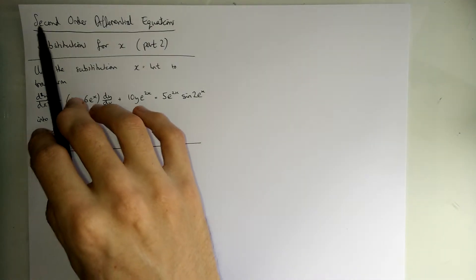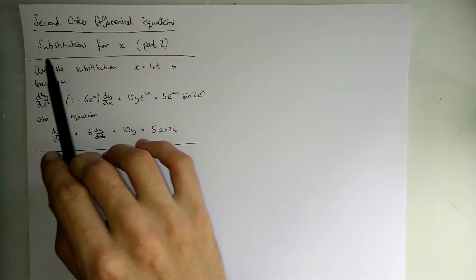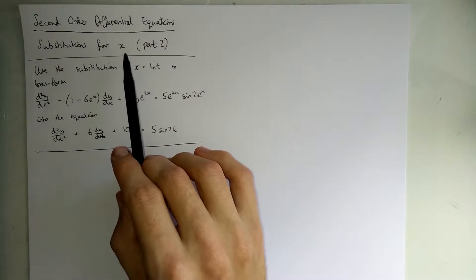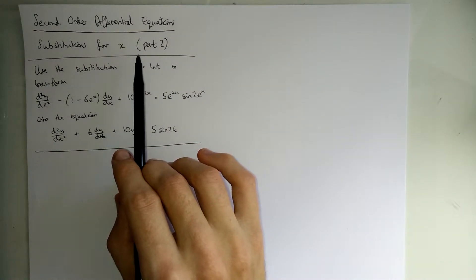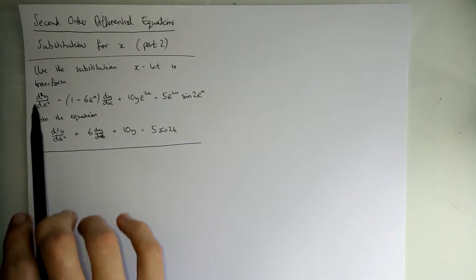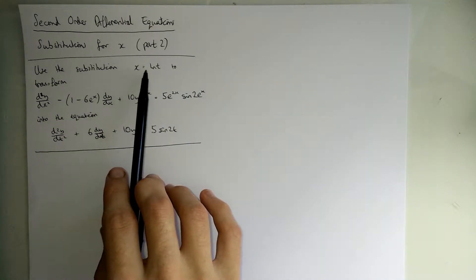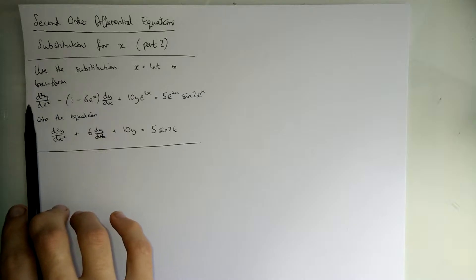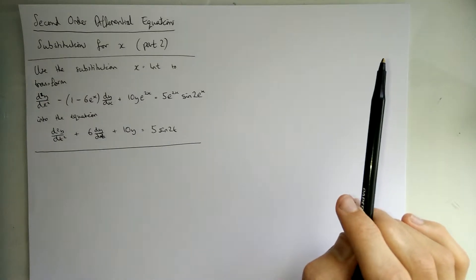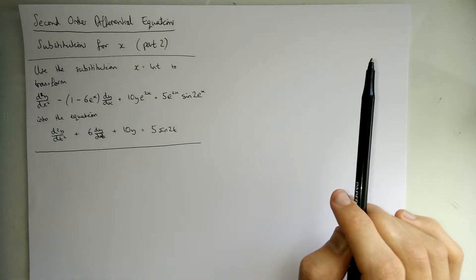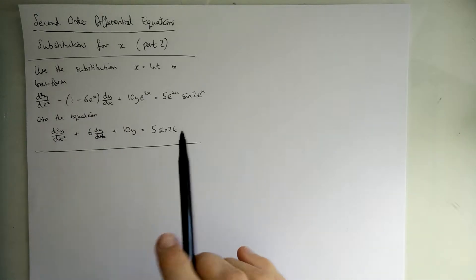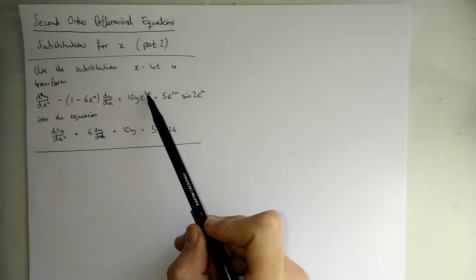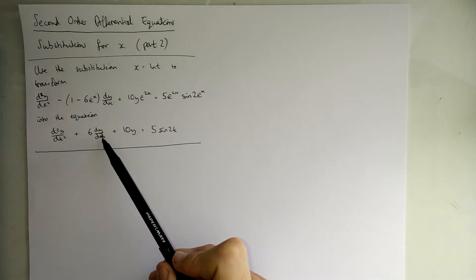Okay, so in this video on second-order differential equations, we're looking at substitutions for x again. This is the second video on this particular sub-topic. We've got a question here. We're looking at using a substitution x equals ln t to transform this monstrosity of an equation, this beast, into this much nicer equation. And you can see what's happened with all the x's. They've gone and we've now got t's.